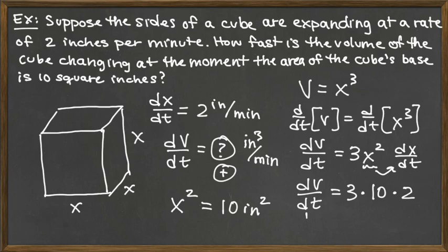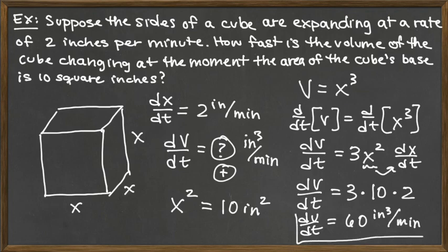So completing that, we've got dv/dt equals 3 times 10 would be 30 times 2 would be 60. And then we already saw that the units were going to be inches cubed per minute. And it was positive like we expected it to be.